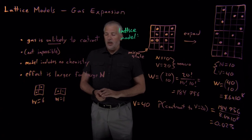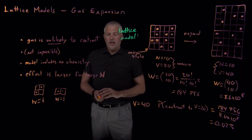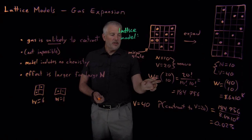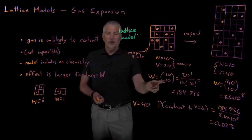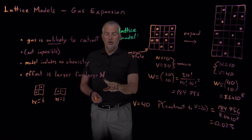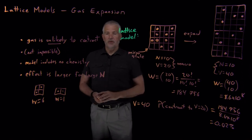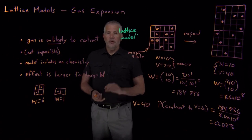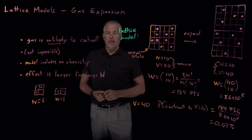We have two things to do next. First, we need to understand how to do these calculations when we're taking factorials of large numbers like Avogadro's number, not just 10 or 20. But before that, we need to explore a few more types of lattice models.